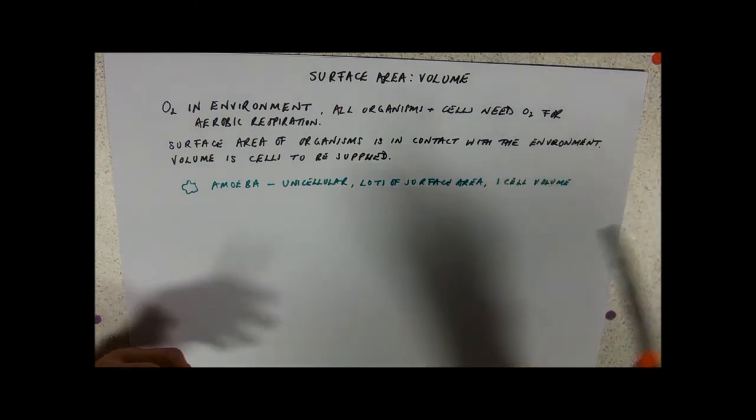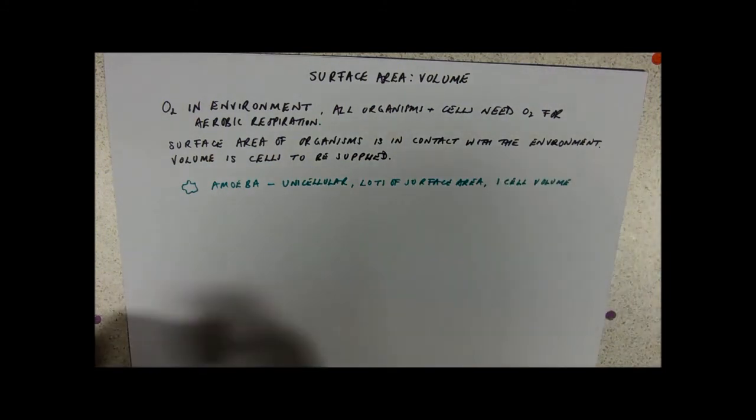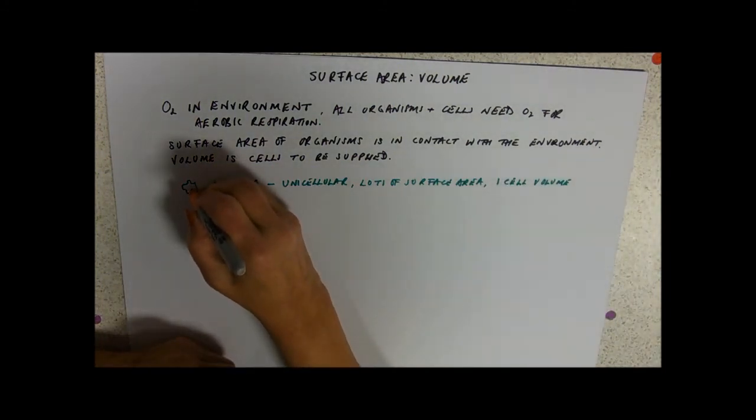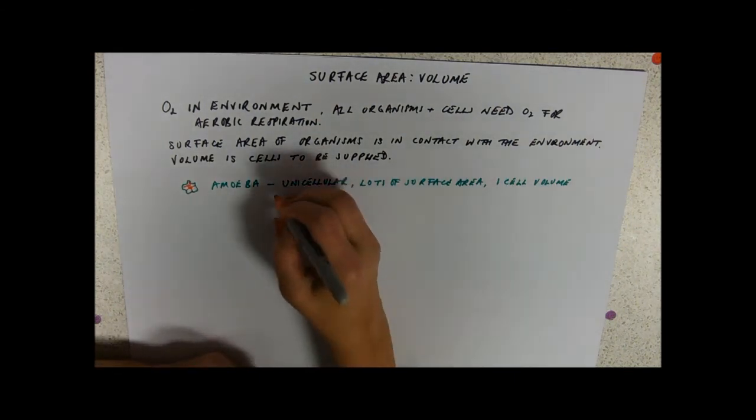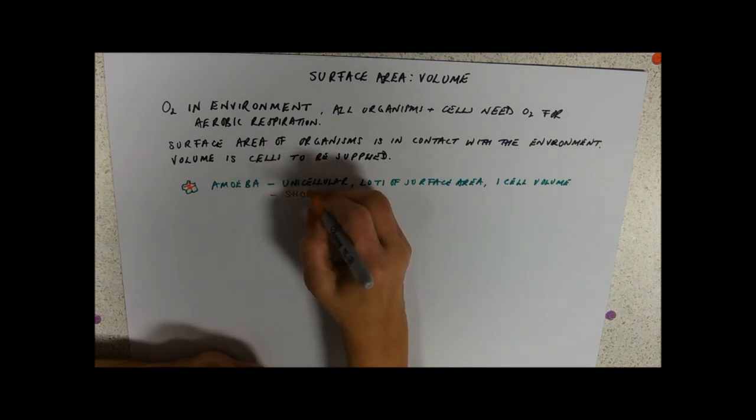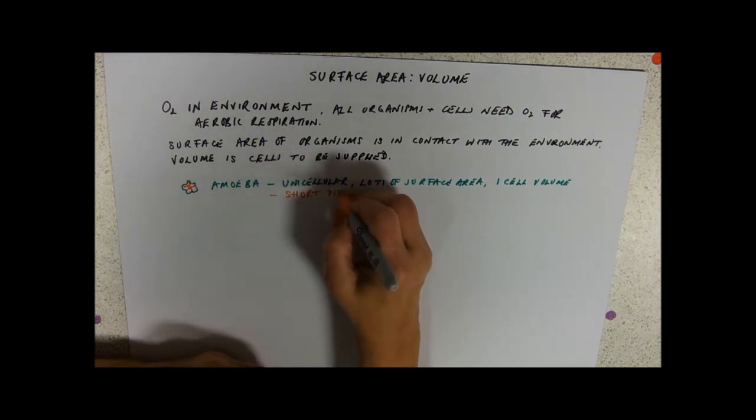And also, it's only a teeny tiny distance to the middle. So if you're diffusing all the way across your surface, and it's only got a very small diffusion distance, you can get loads of oxygen and get rid of loads of carbon dioxide. So it's also got a short diffusion path.